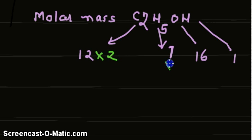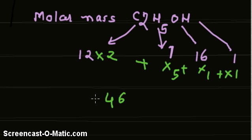Summation of all these atomic masses - carbon's contribution, hydrogen's contribution, oxygen's contribution - gives us the molar mass of ethanol, which is equal to 46.